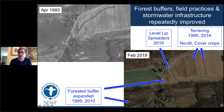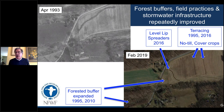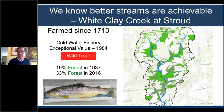We added terracing across that field to deal with field erosion, then revisited it in 2016 and added level lip spreaders — one here, another there — to absorb anything that made it off the field. If the level lip spreader fills up, flow goes through the reforested buffer. We widened the buffer while still maintaining agricultural productivity on the farm. White Clay Creek is now a cold-water fishery and an exceptional value stream — a designation it earned in 1984. It's a wild trout stream with only 33% forest cover, and here's one of the big brown trout we pulled out.